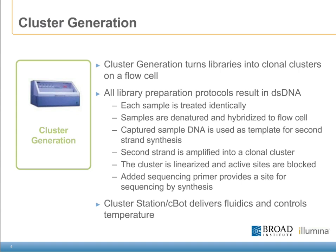The second strand can then be amplified into the clonal cluster, and the cluster can be linearized differentially to specifically sequence the forward or reverse strand. We also block any unused oligos on the surface of the flow cell to prevent any background fluorescence, and add a sequencing primer specific for the read we want to do. The cluster station C-Bot delivers fluidics and controls temperature.